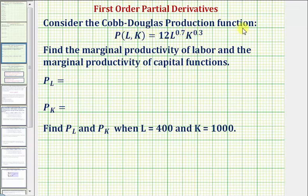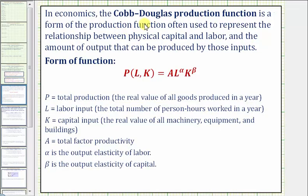We're given a Cobb-Douglas production function, P of L comma K. We want to find the marginal productivity of labor and the marginal productivity of capital functions. In economics, the Cobb-Douglas production function is a form of the production function often used to represent the relationship between physical capital and labor and the amount of output that can be produced by those inputs.